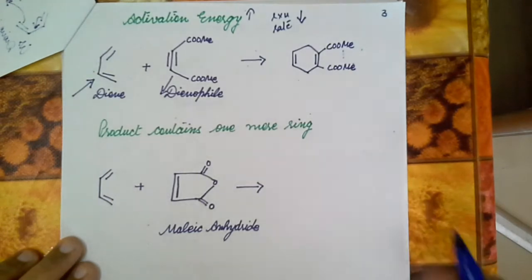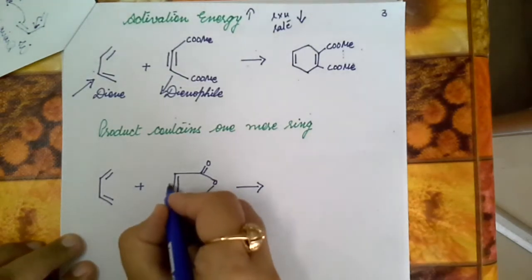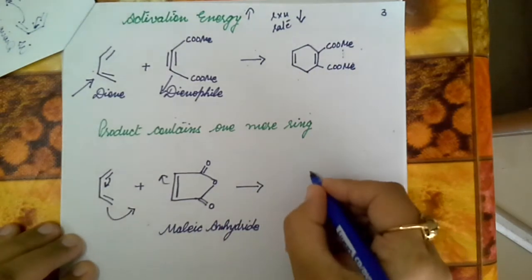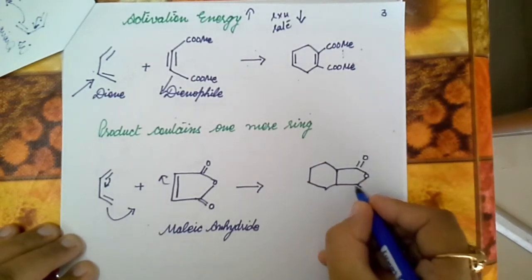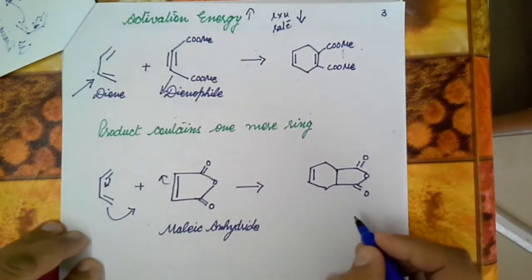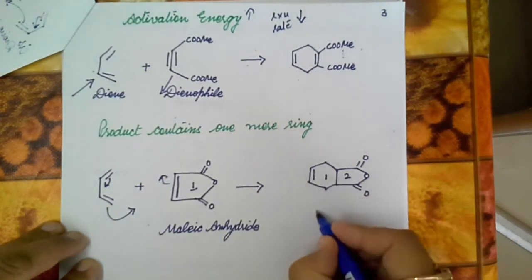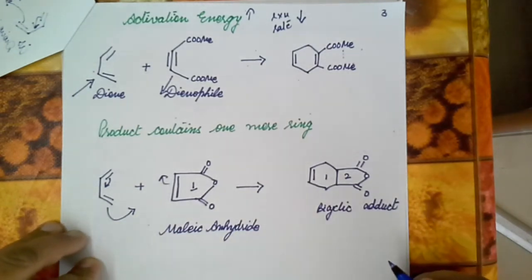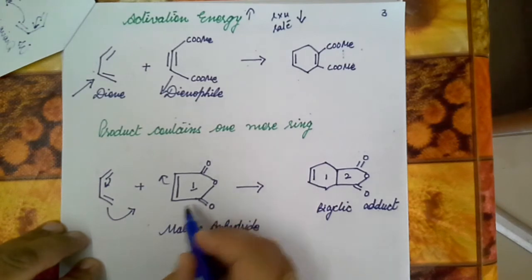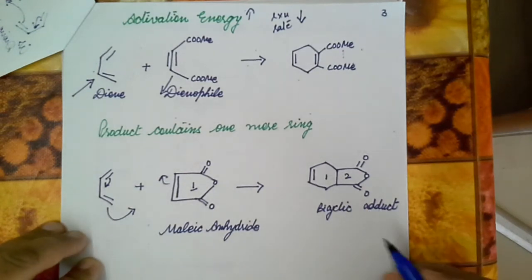In the Diels-Alder reaction, the product is cyclic in nature and always contains one more ring than is present in the reactants. Taking the example of maleic anhydride reacting with butadiene — in the reactant there is only one ring, but in the product there is the appearance of another ring. When one ring of maleic anhydride is added to the diene, there is the appearance of another ring in the adduct, resulting in the formation of a bicyclic adduct.